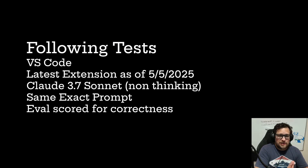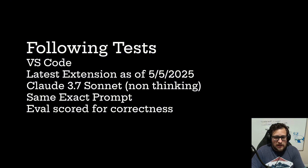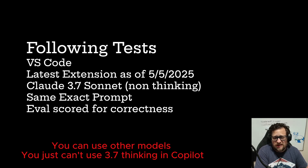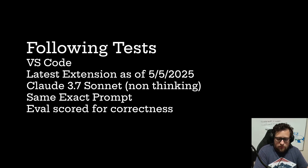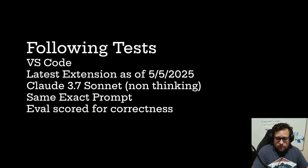I'm going to show you some timing tests I did using VS Code with the latest extension as of May 5th, 2025. I'm using Claude 3.7 Sonnet non-thinking — that's all you can use in agent mode anyway. I'm also comparing it against Roo Code, Claude Code, and Augment Code, all also using Claude 3.7, with the same exact prompt. I'm also eval-scoring it for quality output, and all the tests have a very similar eval score, so the quality is about the same.